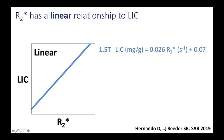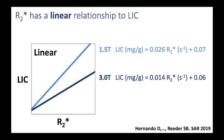Recent work by Diego Hernando and Scott Reeder, presented at the SAR 2019, describes this formula. At 1.5 Tesla, the LIC is equal to 0.026 times the measured R2* at 1.5T plus 0.07. If you have a 3T magnet, you also have a linear relationship, but the linear relationship at 3 Tesla is slightly different: LIC equals 0.014 times R2* plus 0.06.